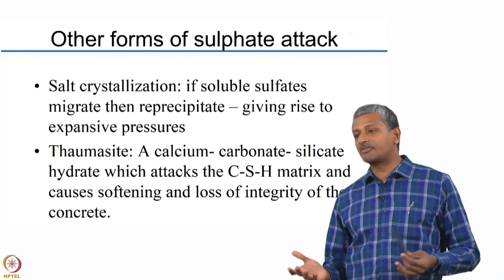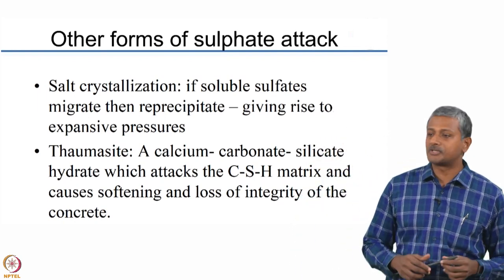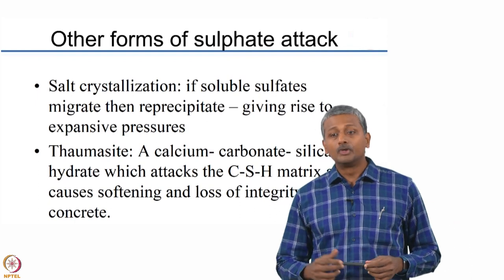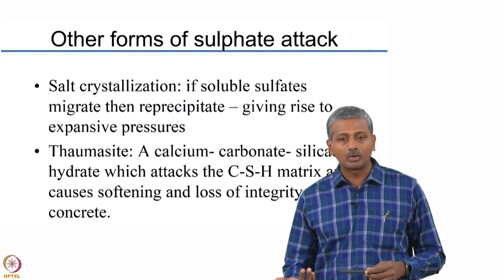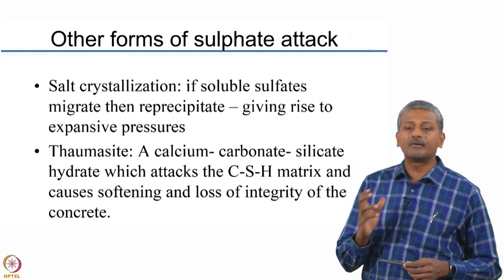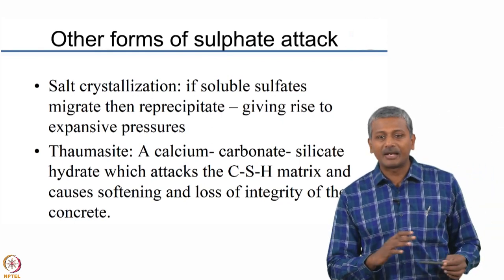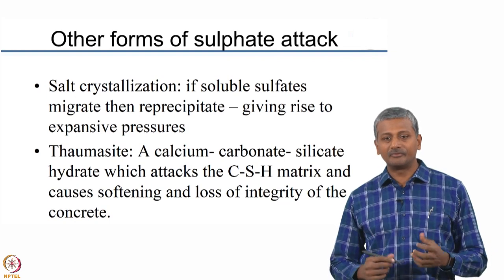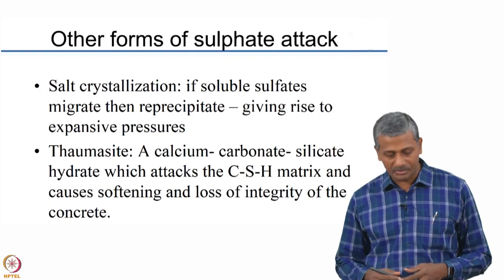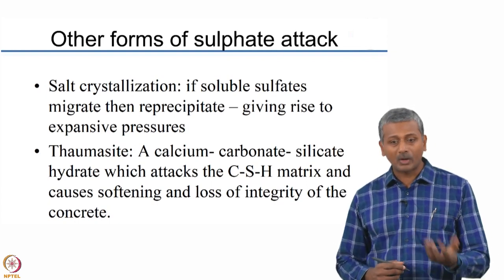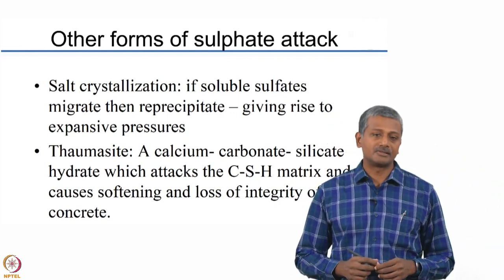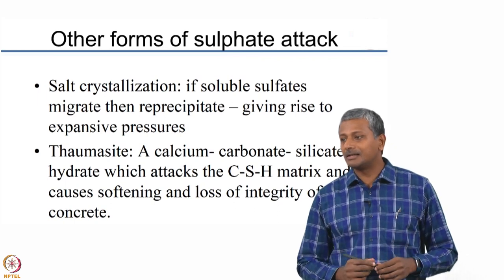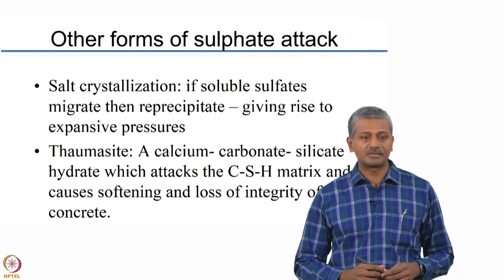You may also have a special form called thaumasite attack, which happens whenever there is a source of carbonates present — for example, cement containing blended limestone (calcium carbonate), or soil and groundwater with carbonates such as hard water. In the presence of carbonate, the sulphate reactions can take a new course, leading to direct destruction of CSH. This forms a mush-like product with absolutely no structural integrity, called thaumasite. This form of attack is particularly deleterious in conditions below 15 degrees Celsius, with the optimal range for thaumasite formation being 5 to 15 degrees Celsius.